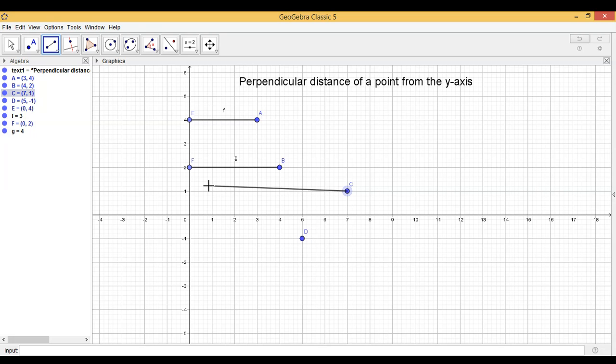perpendicular distance of C whose coordinates are 7, 1 from the y-axis is 7 units. So what do we observe?